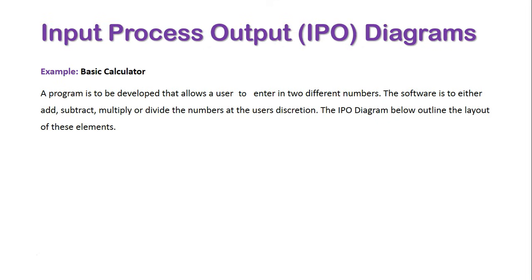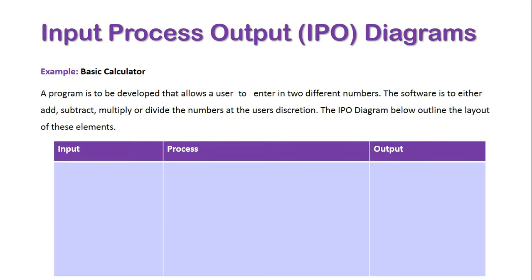Let's look at an example of a basic calculator. A program is to be developed that allows a user to enter two different numbers. The software is to either add, subtract, multiply, or divide the numbers at the user's discretion. The IPO diagram will outline the layout of these elements. Here is our IPO diagram, and it's all blank.